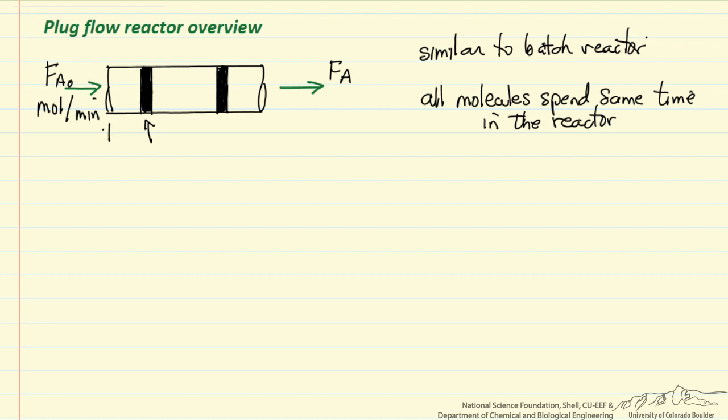So when we look at modeling this, we'll use volume as our independent variable. And say volume is zero at the inlet, and the outlet volume is the total volume in the reactor.